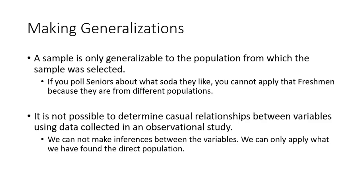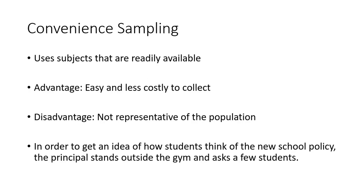You can't make causal relationships between variables based off of an observational study — you can't say this causes that. Observational studies say 'this is what we see,' but you don't say 'this is what caused that.' This is the correlation versus causation distinction. Just because seniors' favorite drink is Dr. Pepper doesn't mean that being a senior causes your favorite drink to be Dr. Pepper.